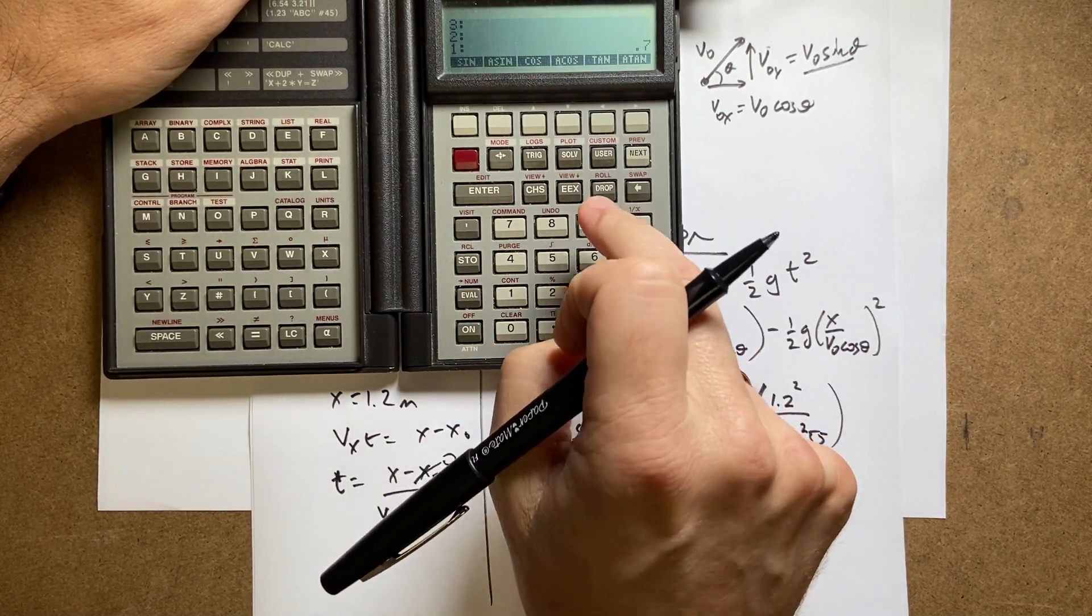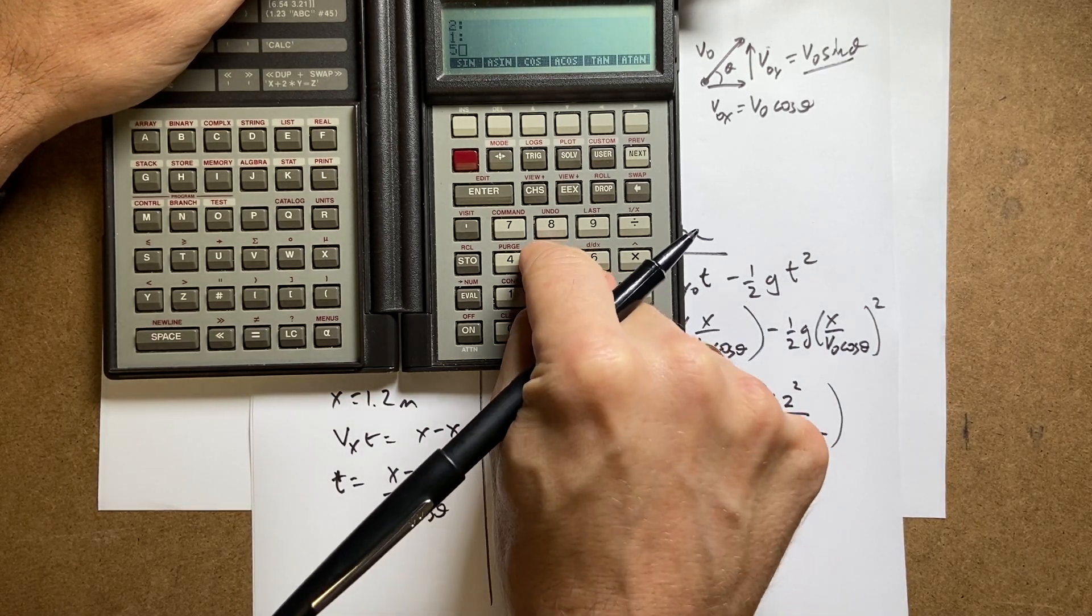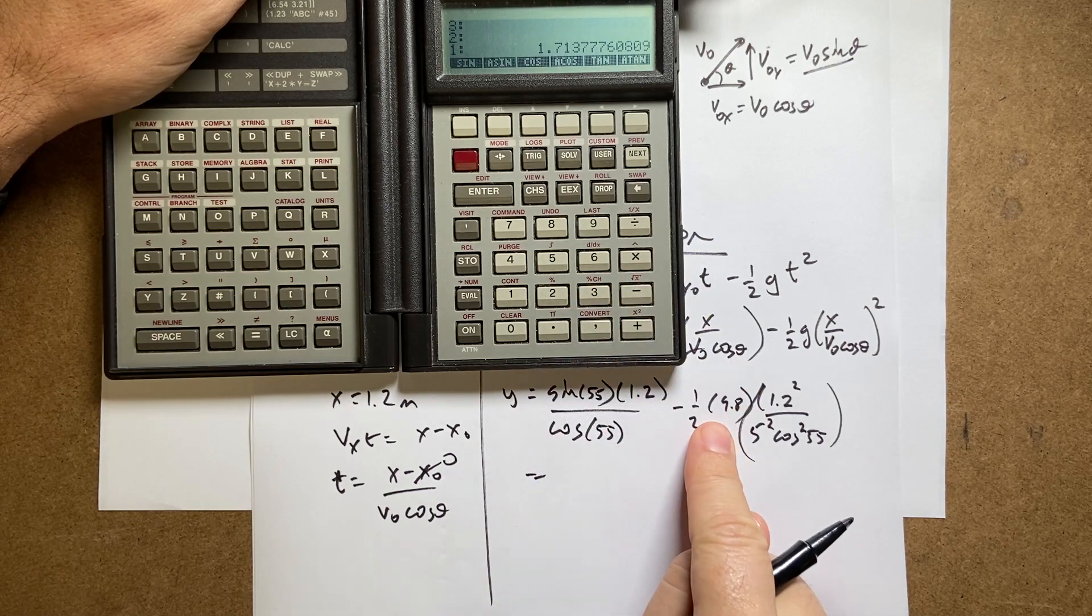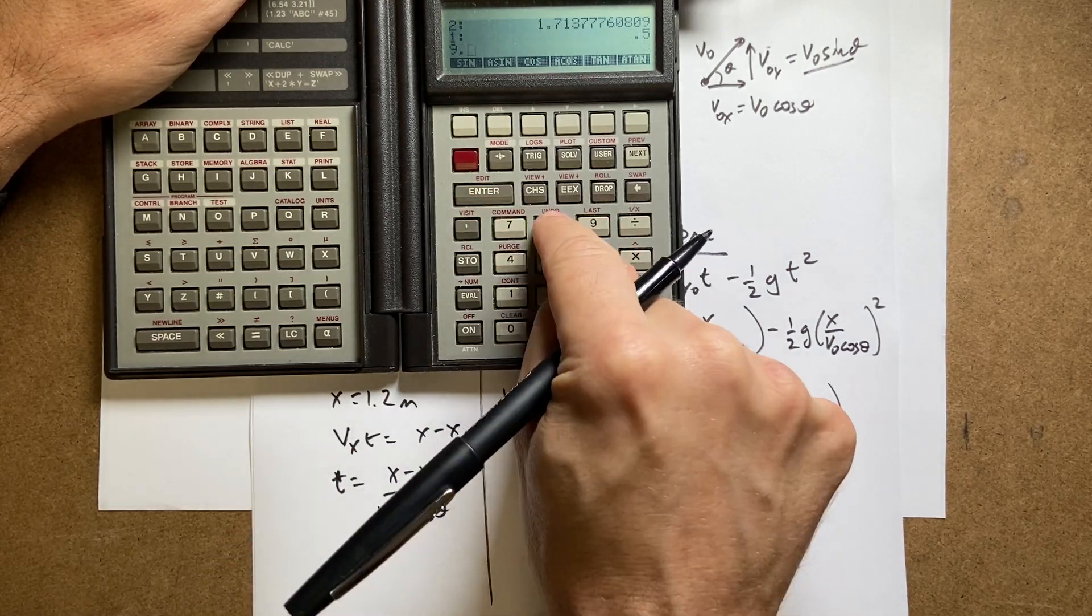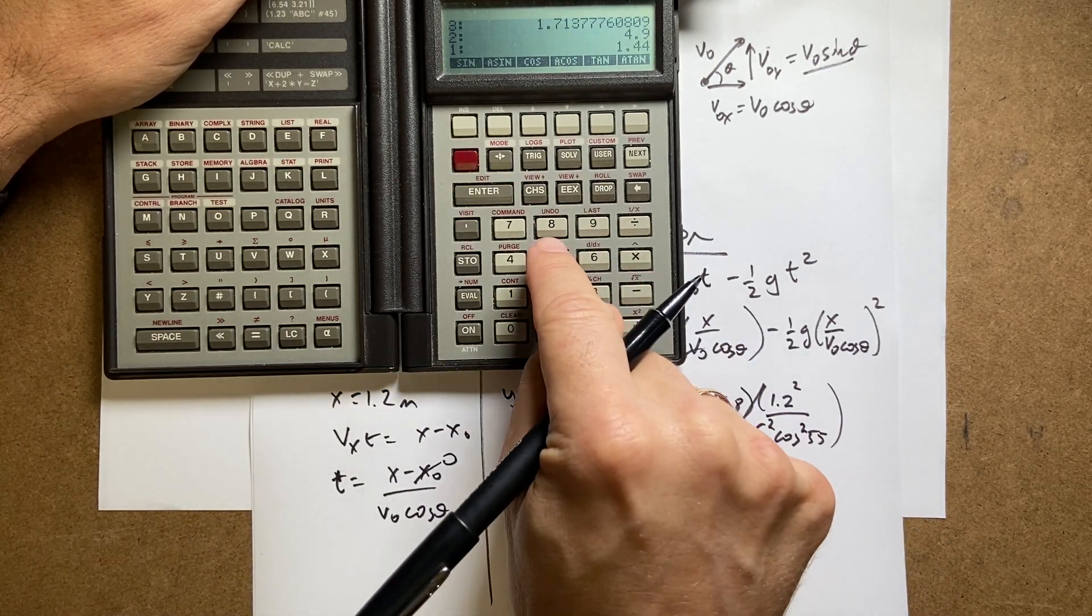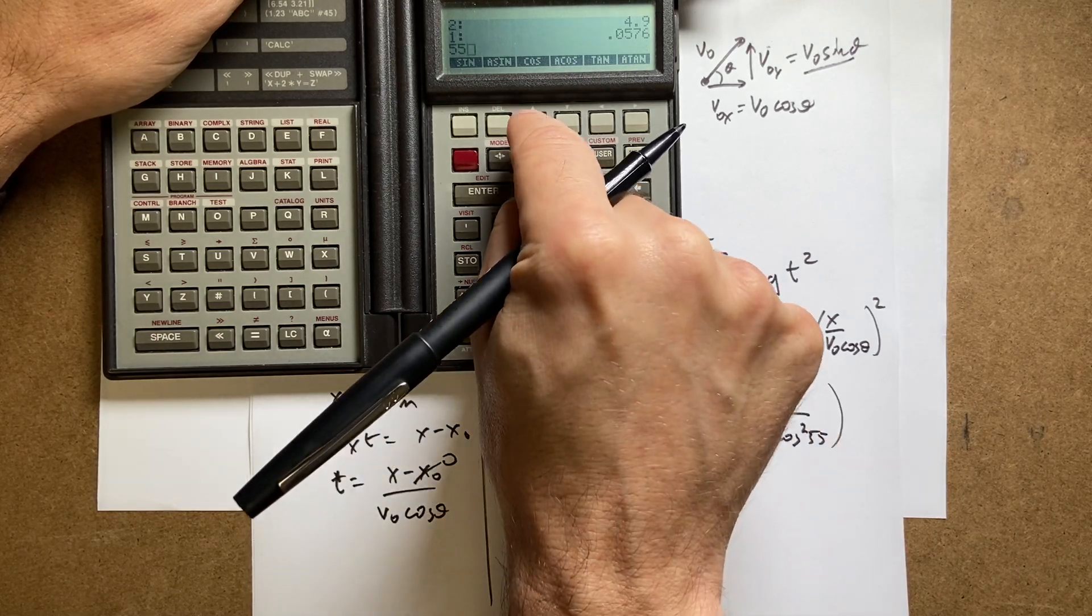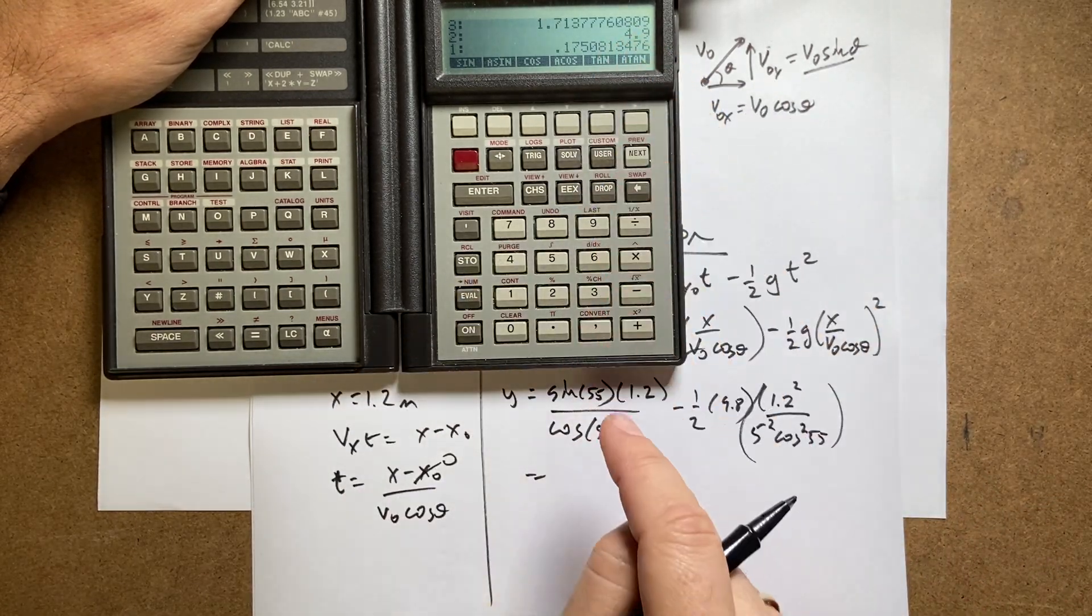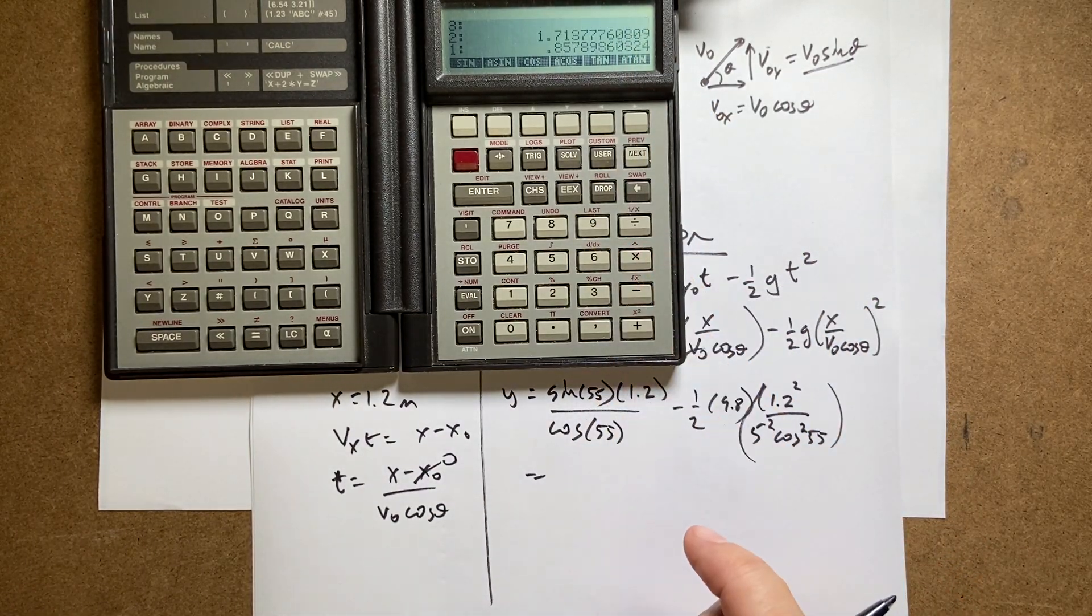Okay, you can see that. So the first thing I'm going to do, I'm going to go ahead and do sine over cosine is tangent. So I'm going to say 55 tangent and then multiply that by 1.2. And then that's that whole number. I'm going to leave it there. And then this is going to be negative 0.5. I'm just going to subtract it. So I'll say 0.5, enter, 9.8 times 1.2 squared. Now I need to divide by 5 squared. 5 squared divided by. Now I'm going to take the cosine of 55, square that, and then divide by that. Now I'm going to subtract those two numbers.